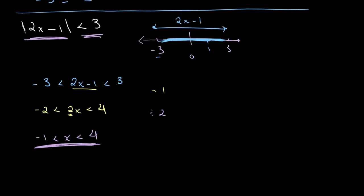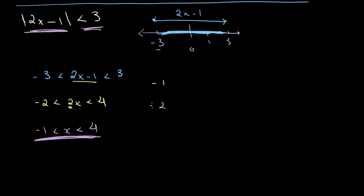This is our final simplified answer. It means that for any value of x between negative 1 and 4, if we plug it into 2x minus 1, we will get an absolute value of 2x minus 1 that is less than 3.